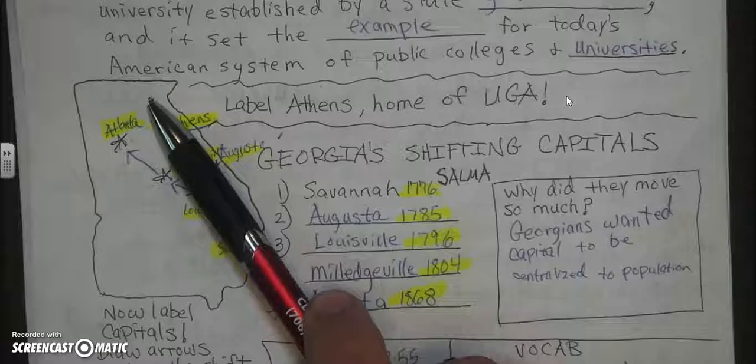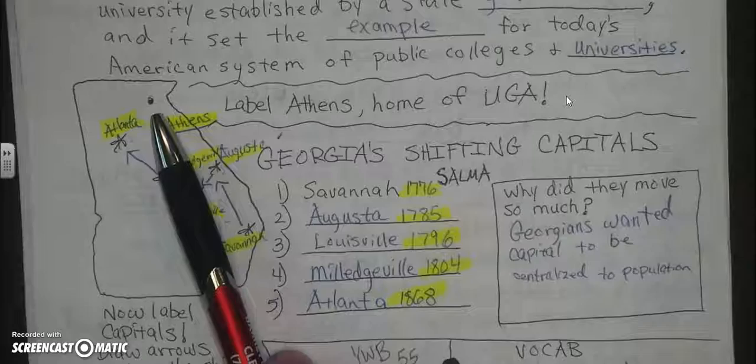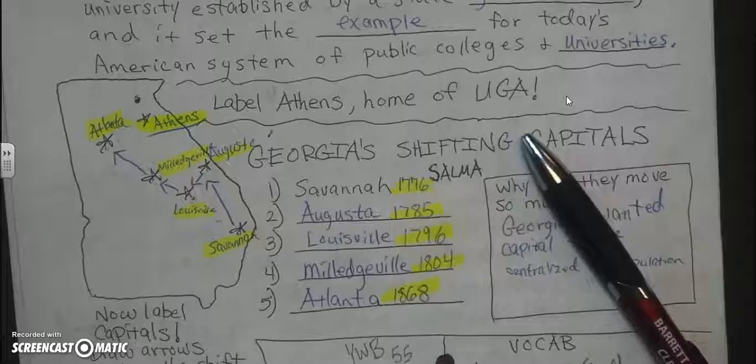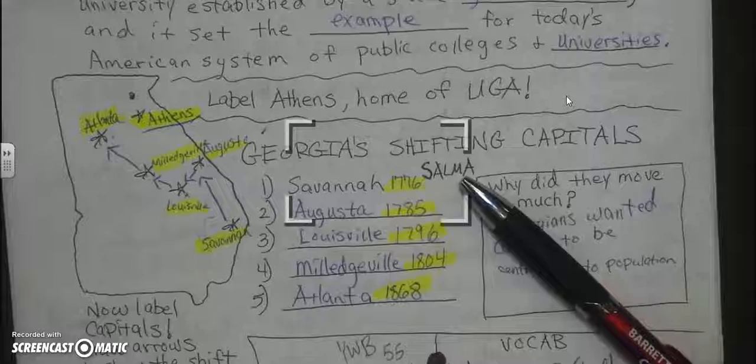I wanted you to label Athens, home of the University of Georgia. Here is Athens — the dot represents where Cleveland is, and here is Athens. That is all that I wanted you to do for that part.